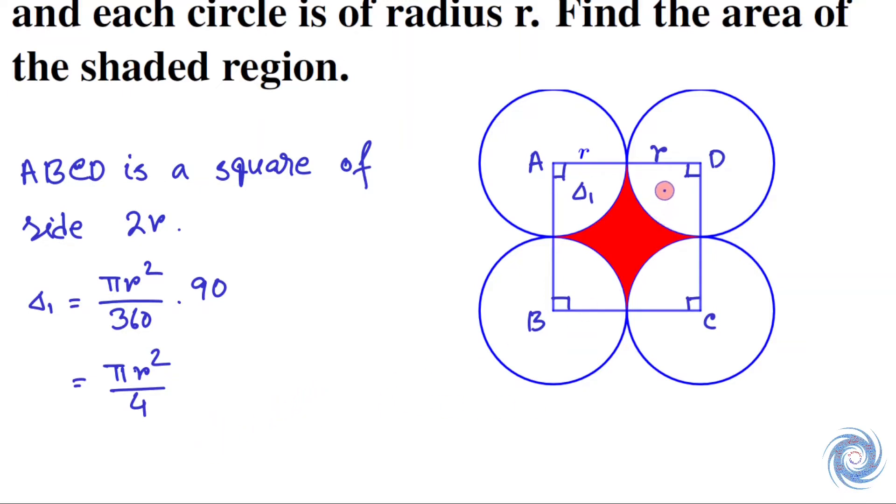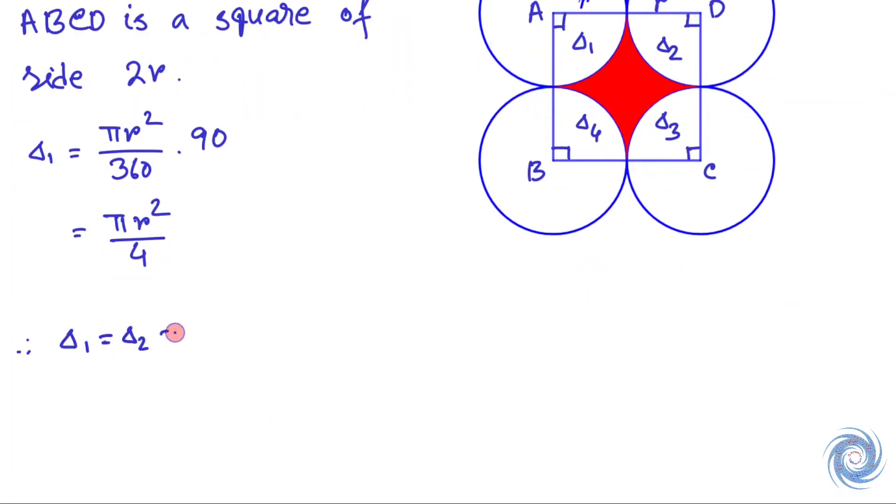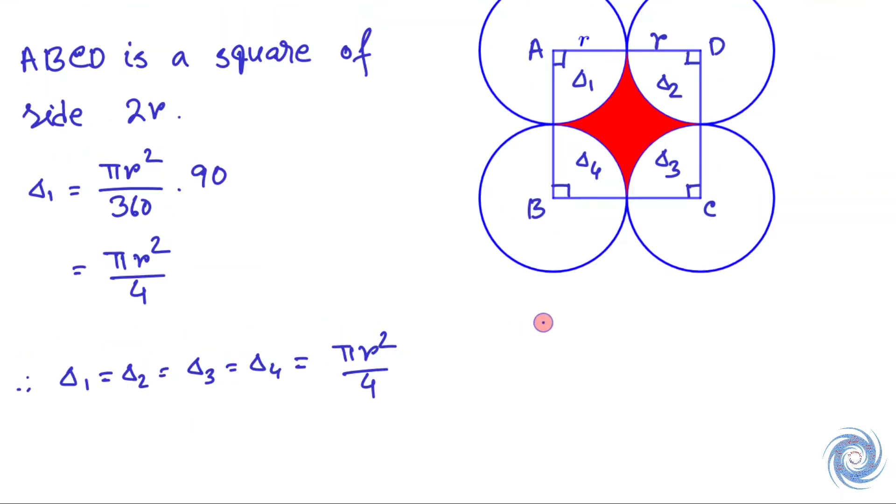And if we take this area as delta_2, this one as delta_3 and this one as delta_4, then we have delta_1 equals to delta_2 equals to delta_3 equals to delta_4 equals to πr² over 4. That means the area of these regions are the same.